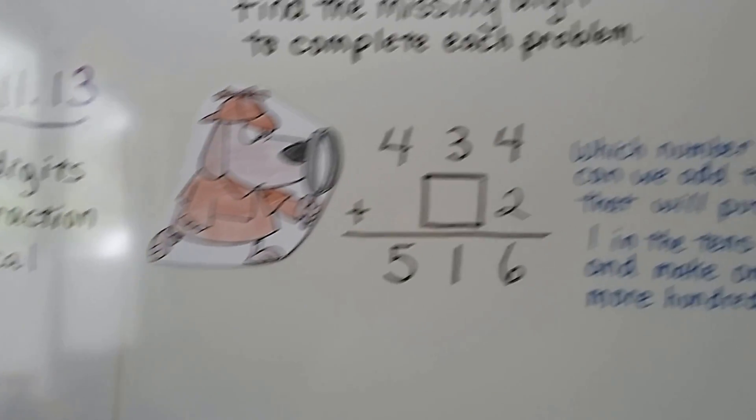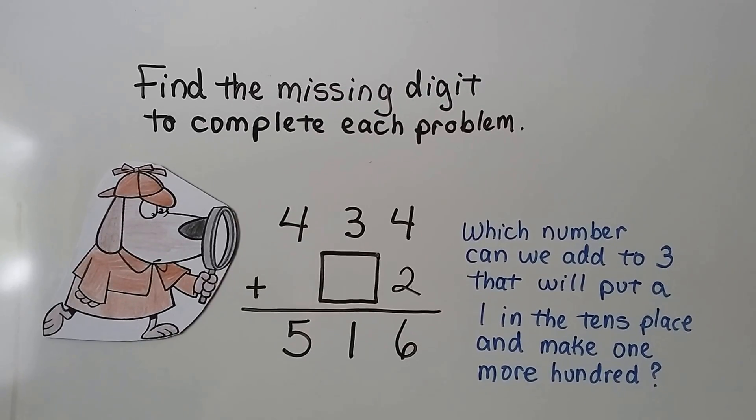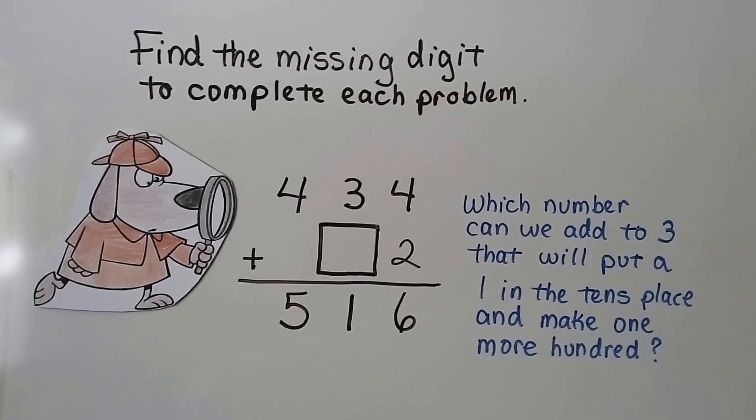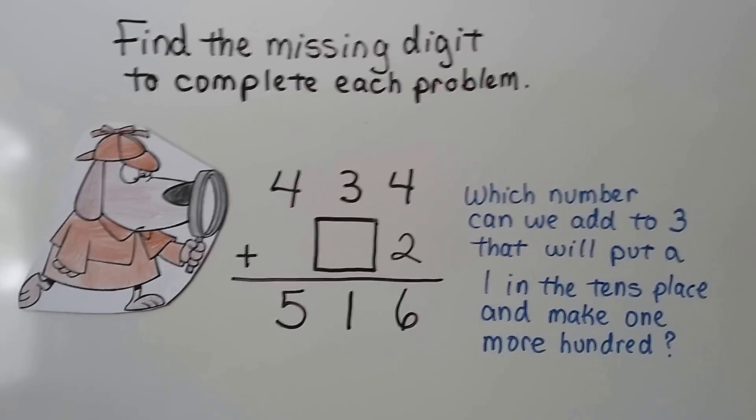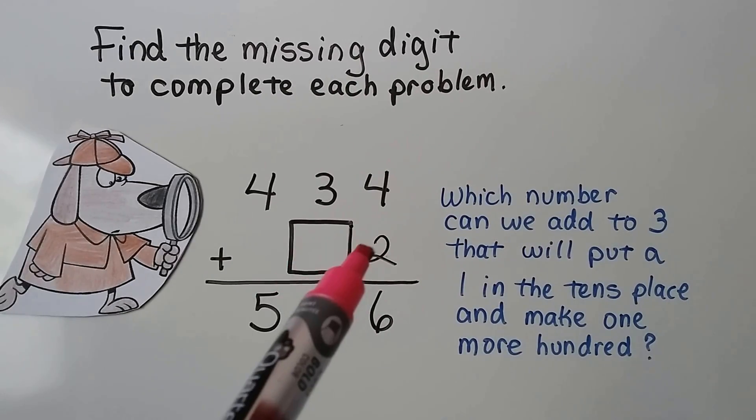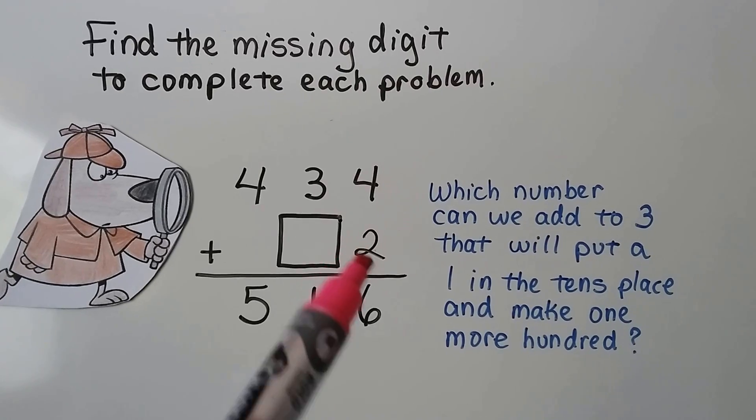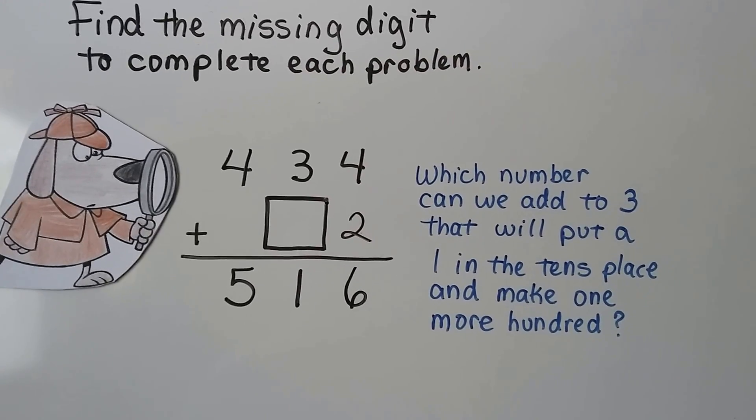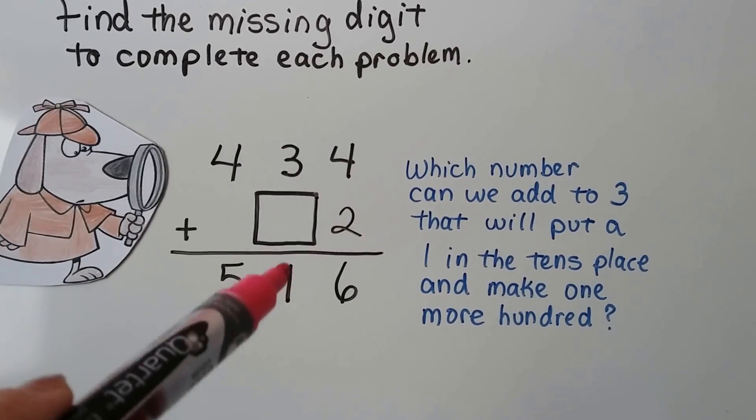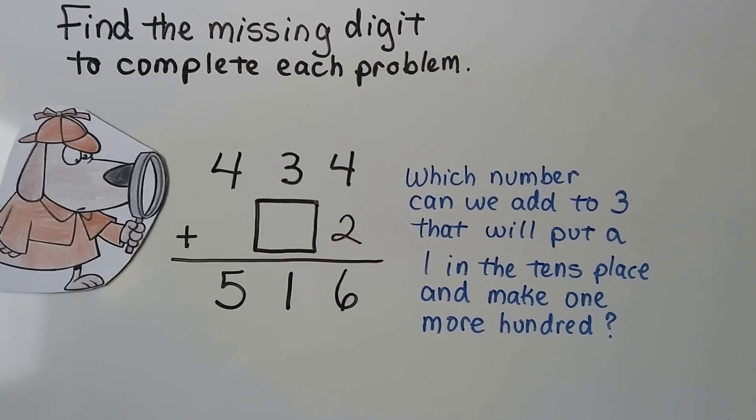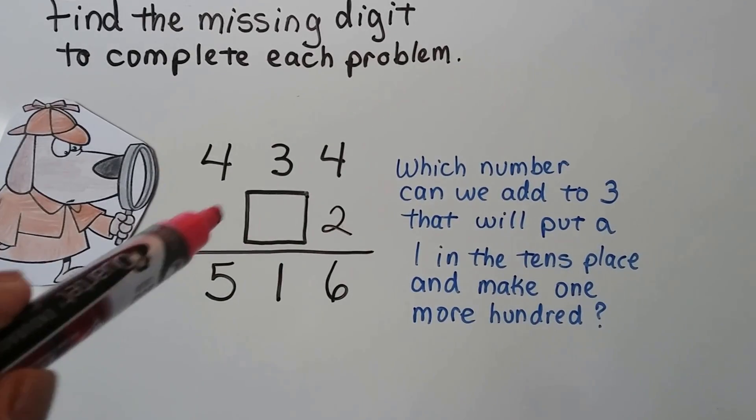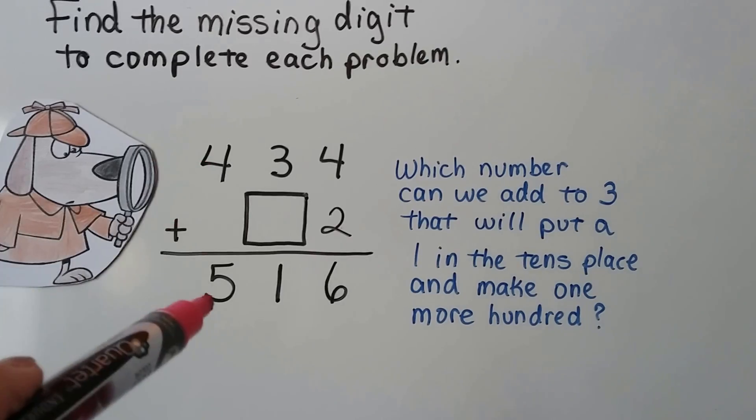So we're going to find the missing digit to complete each problem. We have to really put our thinking caps on because it's going to try to trick us. So we have 434 and it looks like we're taking away a two-digit number. We know there's a 2 in the ones place. So which number can we add to a 3 that'll put a 1 in the tens place and make one more hundred? It went, this is only a two-digit number. There's no hundreds here, but the 4 became a 5.